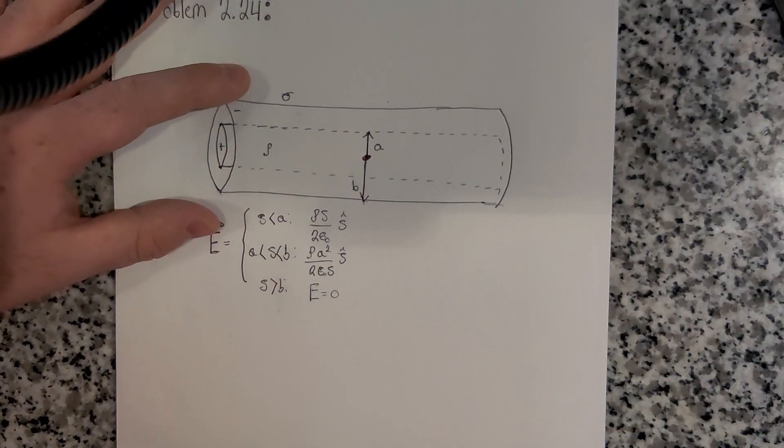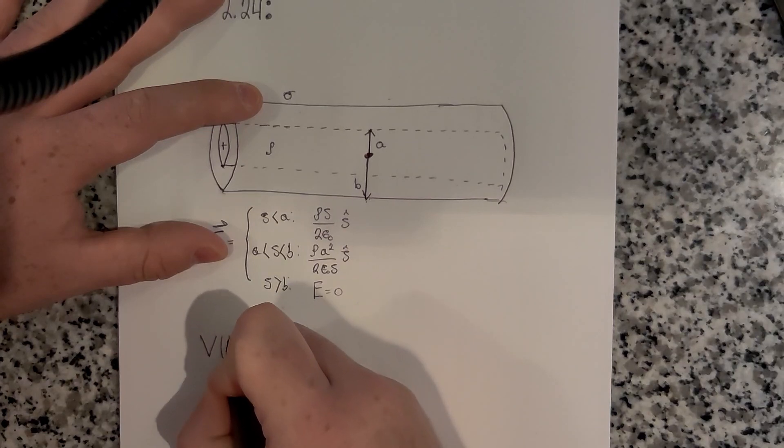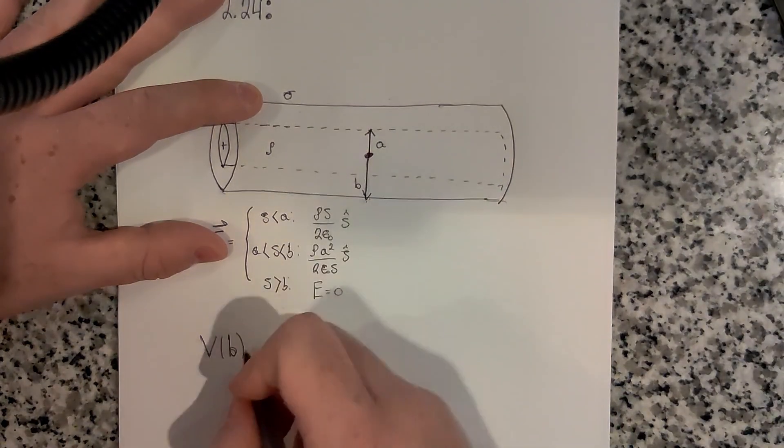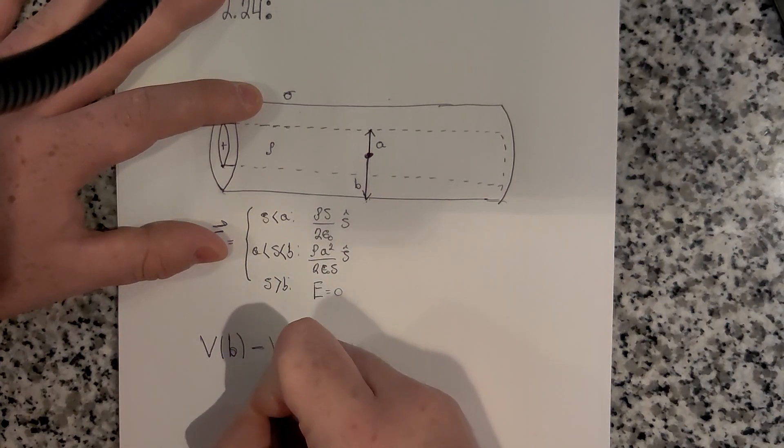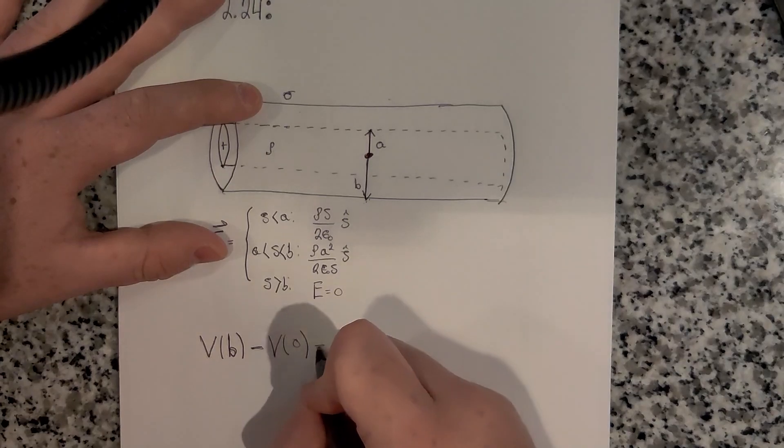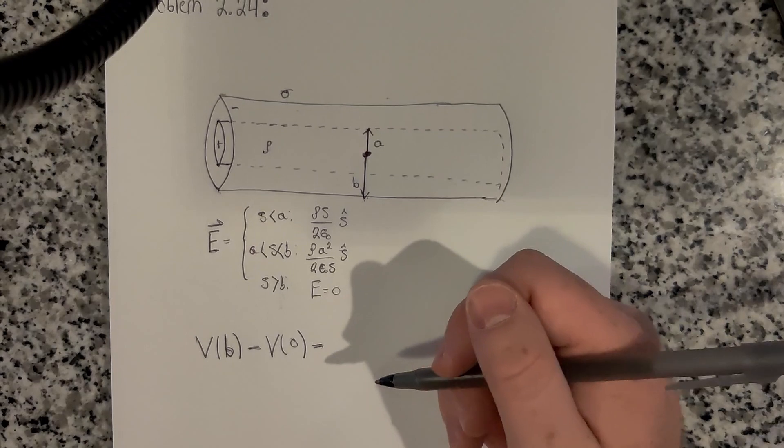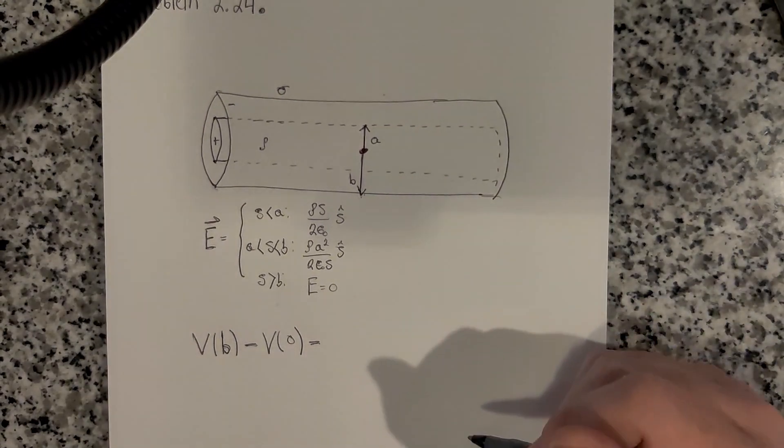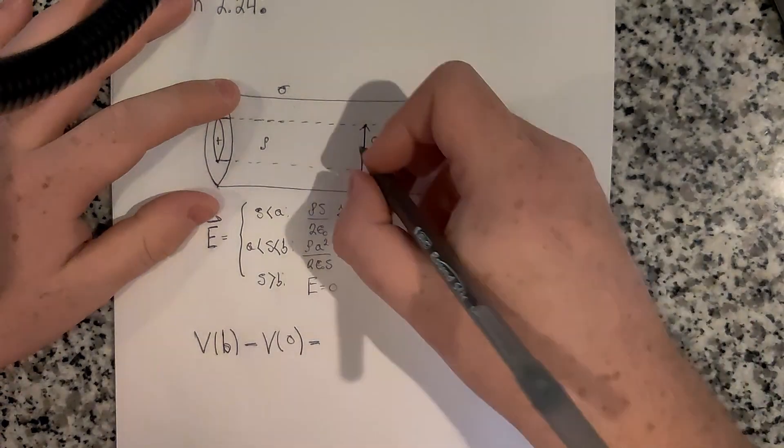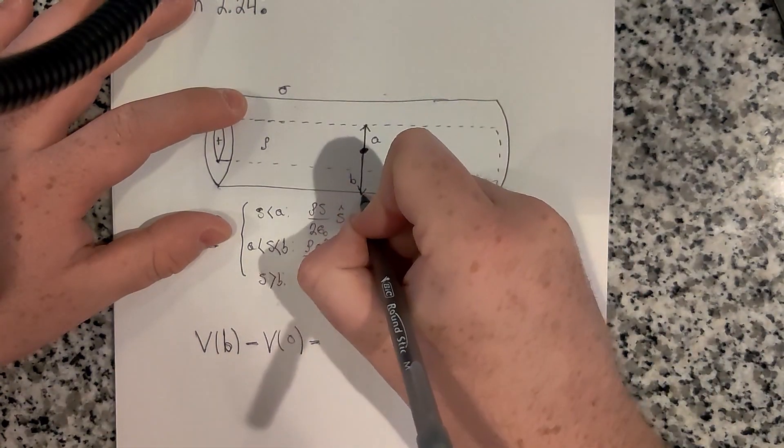So the difference in potential would be like the potential at B, at a point on B at a distance B, minus the potential at the center. We can use our equation that we've been using to find potentials this whole time. I'm going to start at the center and work my way out.